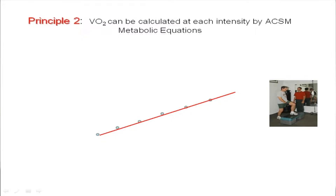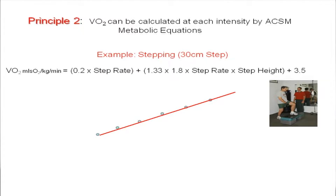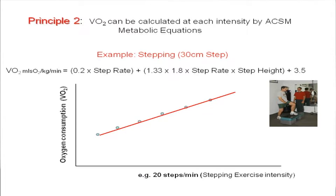We can do exactly the same with different types of exercise such as walking and running, and also with stepping. For stepping at 30 centimetres, given two minutes at each stage of a step test, the linear relationship between oxygen uptake and stepping rate is exactly as for the treadmill. At 20 steps a minute on a 30-centimetre step, the oxygen cost would be 22.1 mils per kilogram body weight per minute.